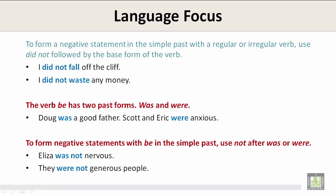To form a negative statement in the simple past with a regular or irregular verb, use did not followed by the base form of the verb. For example: I did not fall off the cliff.